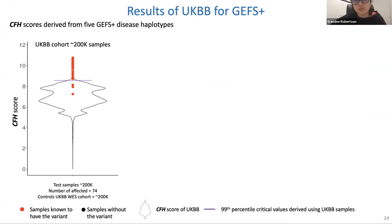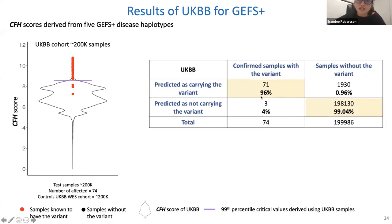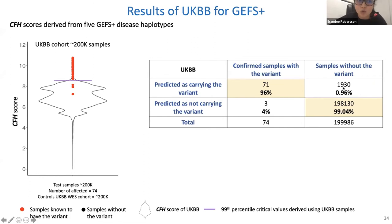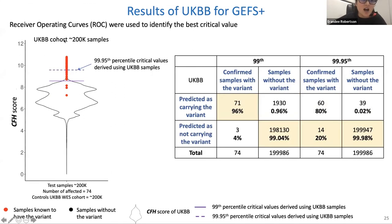We phased all 200,000 samples using SHAPEIT and ran FoundHaplo using the same five GEFS+ disease haplotypes. Here the 99th percentile critical value is calculated from the UK Biobank cohort itself — since with such a massive cohort, positive cases appear at the right tail of the distribution. The algorithm correctly predicted 71 of 74 samples (high sensitivity and specificity). However, at the 99th percentile about 2,000 false positives remain; using ROC curves, the optimal cutoff was 99.95th percentile, achieving 80% sensitivity while dramatically reducing false positives.